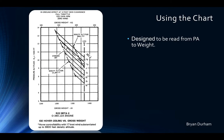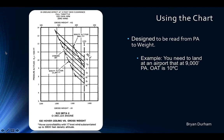Using the chart: the way it's designed to be read is from pressure altitude over to a temperature, then straight down — that gives you an ideal weight to perform an in-ground effect hover. Keep in mind we're talking about hovering within one rotor diameter of the ground. For example: landing at an airport at roughly 9,000 feet pressure altitude, OAT 10 degrees — go from 9,000 straight over to the 10-degree temperature line, then straight down, and that's the maximum weight for an IGE hover there.